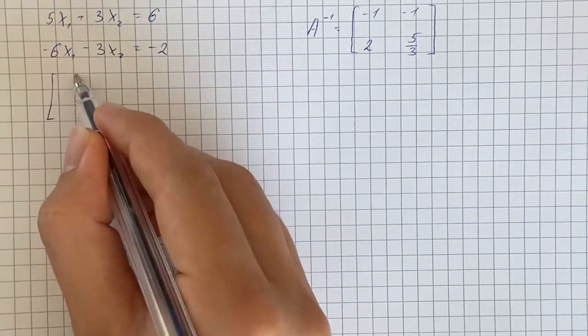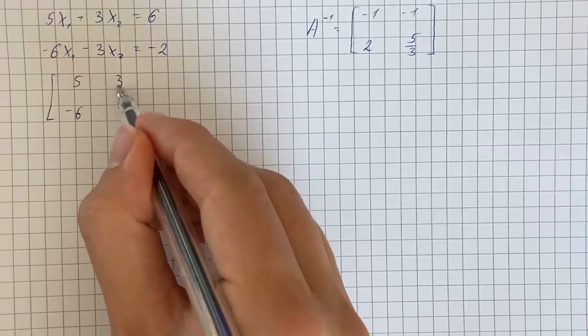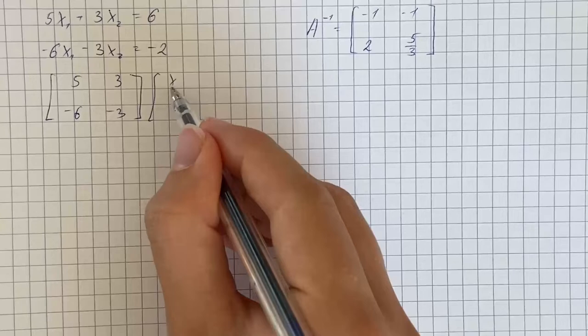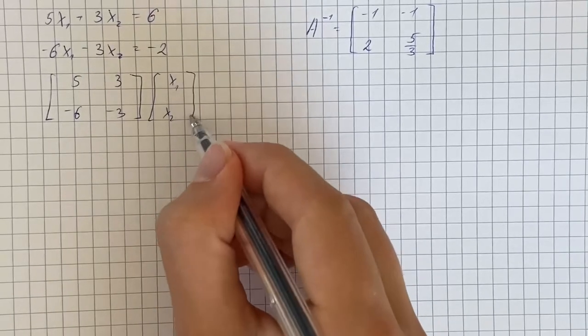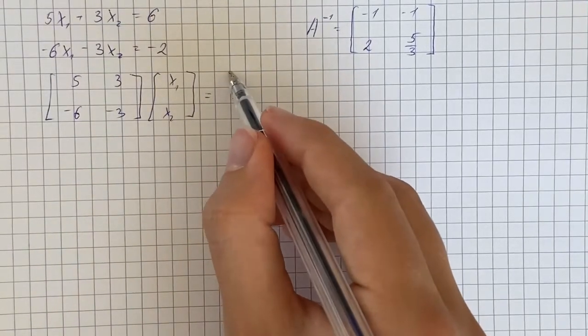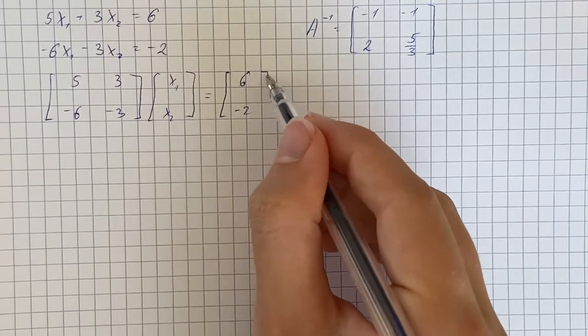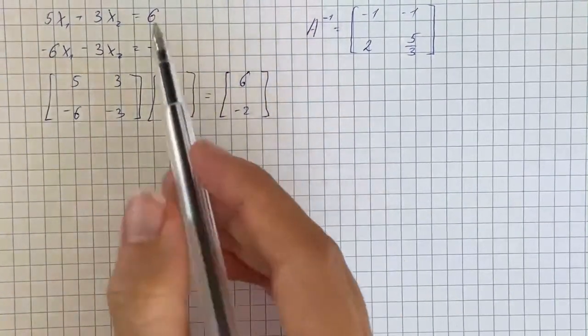So that's going to be the matrix 5, -6, 3, -3, times the column vector x1, x2, and that equals the column vector 6, -2. So this is the same thing as our system.